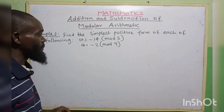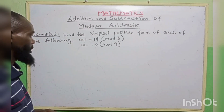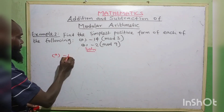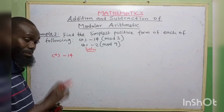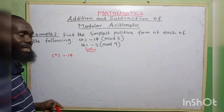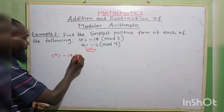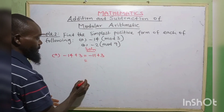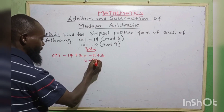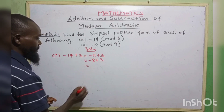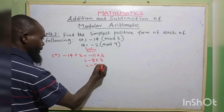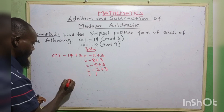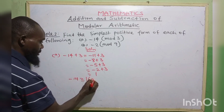Example 2: Find the simplest possible positive form of each of the following. First: minus 14 in modulo 3. We want to find the simplest positive number in modulo 3. We keep adding 3 until we reach a positive value: minus 14 plus 3 is minus 11, plus 3 is minus 8, plus 3 is minus 5, plus 3 is minus 2, plus 3 gives 1. So minus 14 is equivalent to 1 in modulo 3.